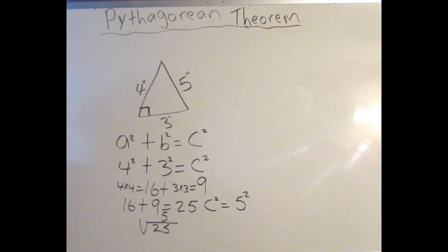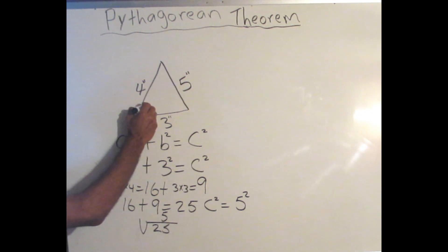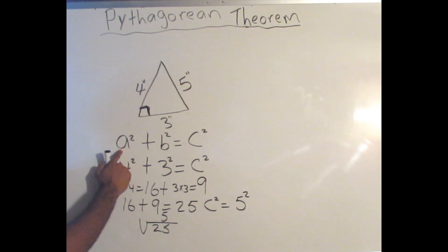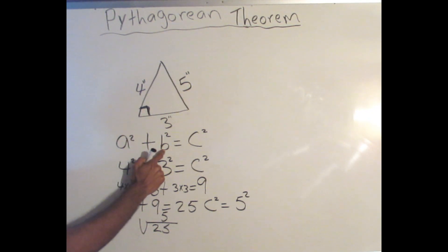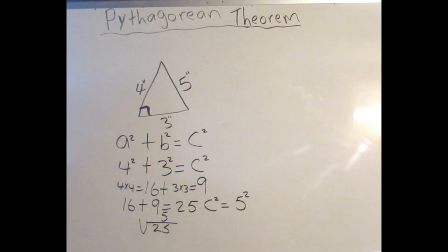Whenever you're finding the missing length of a right triangle, you'll recognize it by that little square, and you'll use the formula a² + b² = c². Apply your exponents, add the results, then take the square root of your answer — and that's how you find the missing length. Thanks so much for tuning in; remember you can subscribe for more videos. Much more coming soon, thank you!